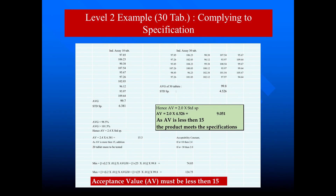The content uniformity specification is met according to the European Pharmacopoeia. This is how we calculate the content uniformity of tablets. As mentioned, content uniformity of tablets is very important in the case of potent and life-saving drugs.